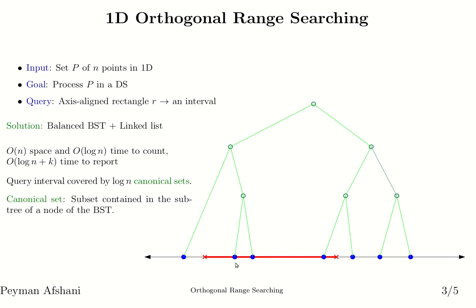There's another way to look at the solution, and that is through the notion of canonical sets. Consider a balanced binary search tree — assume these green nodes are the internal nodes and the points themselves are stored at the leaves. A canonical set is a subset that is contained in an interval in a subtree of this binary search tree. For example, all the points stored in a subtree form a canonical set. We start by having the whole point set as one canonical set, then we split it into two halves. The points in the left subtree are a canonical set and the points in the right subtree are also canonical, and then we recursively continue.